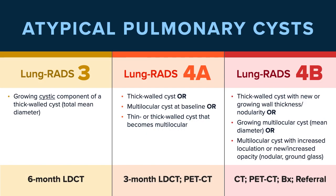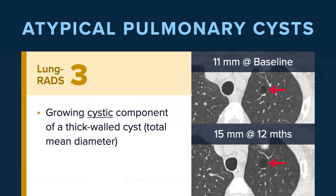With respect to atypical pulmonary cysts, the criteria are going to fall under Lung RADS III, Lung RADS IV-A, and Lung RADS IV-B, and we'll review each of these and the associated management recommendation.